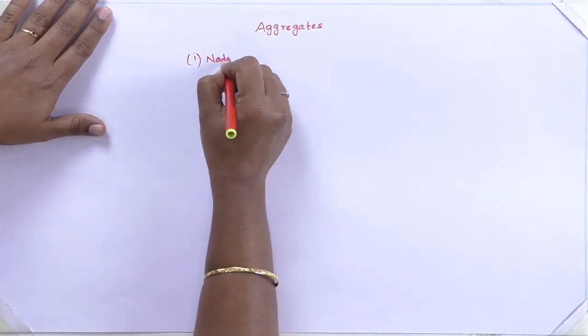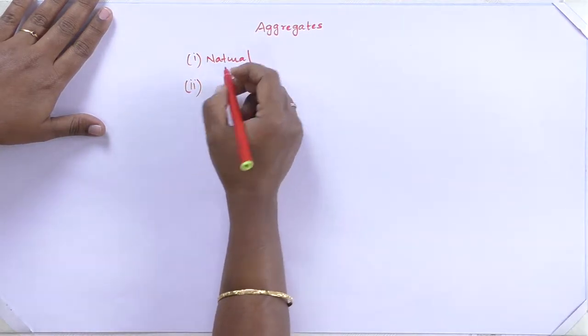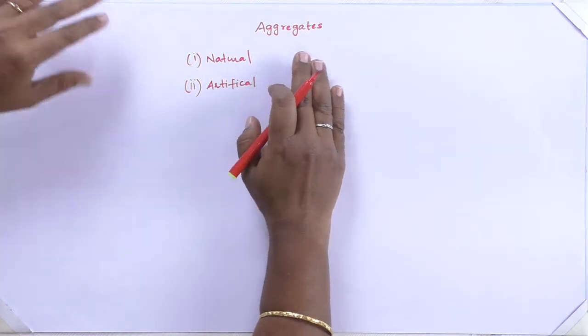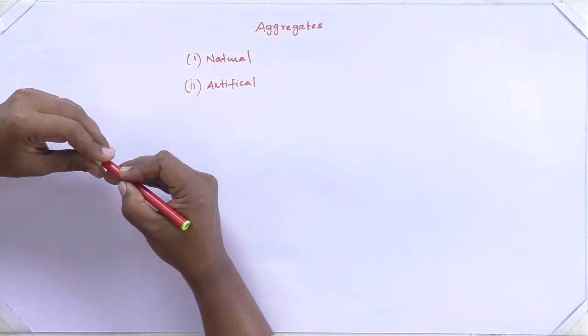Now we are going to discuss how aggregates are formed. There are two main classifications: natural and artificial. Natural aggregates — gravels — are formed from rocks subjected to weathering action. Artificial aggregates are formed artificially using materials like fly ash, from which we aim to produce an aggregate-like material.